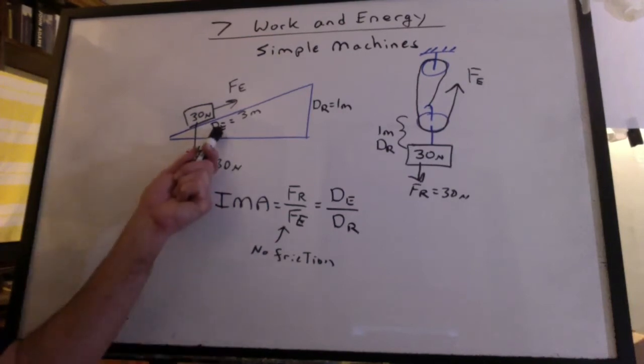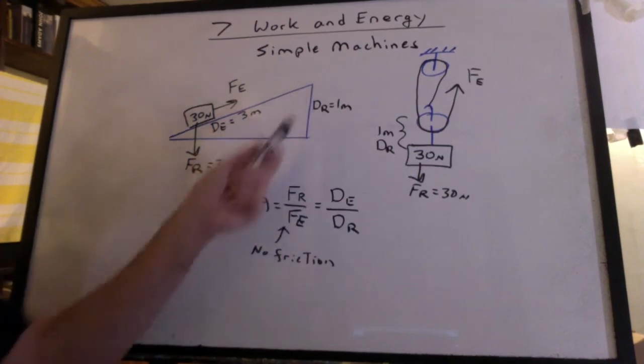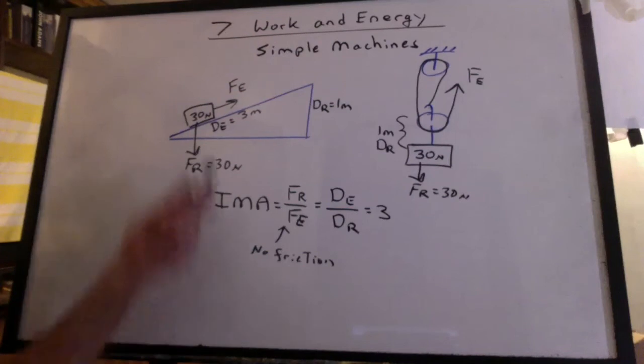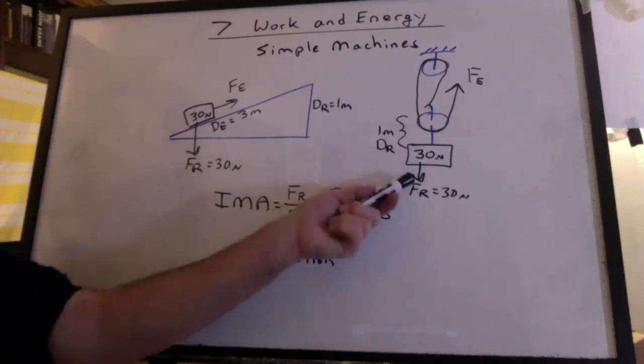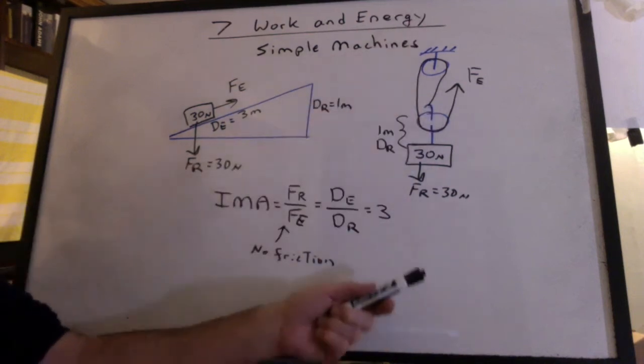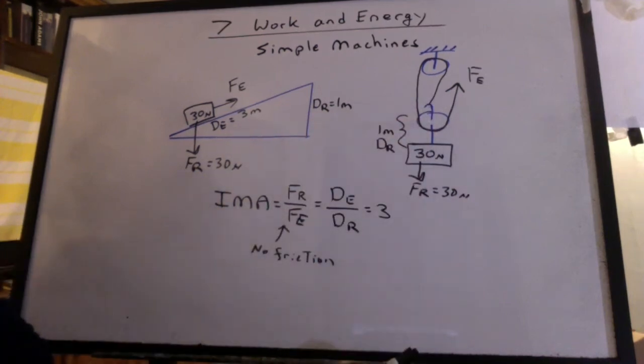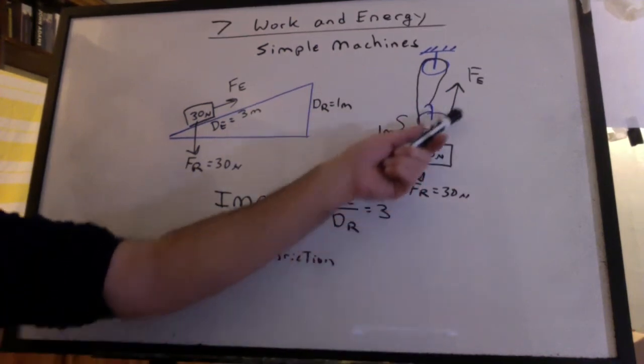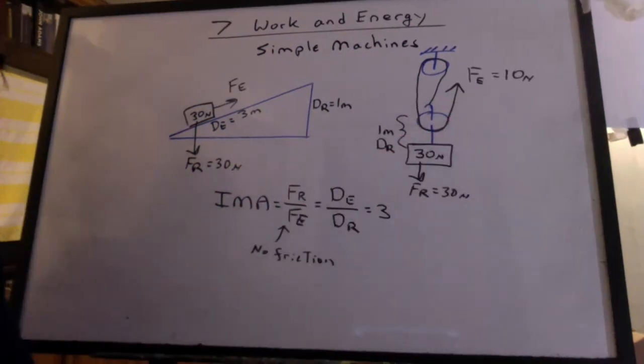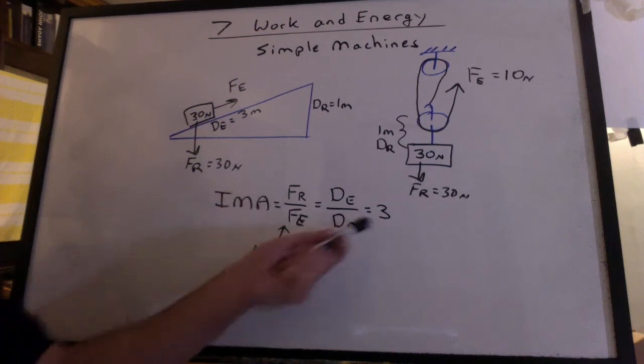Now, look at that DE. It's three meters. The DR is only one meter. So we're lifting an object up one meter and spreading that work out over three meters. The IMA is three. Now, what about over here? We have a 30-newton weight. And I'm not really sure how far my hand is going to go. But I have three parts holding up that 30-newton weight. If this weight is distributed over three strands, ideally, I'll pull with 10 newtons. And I'll be lifting a 30-newton weight with 10 newtons. Yeah, it's still three.